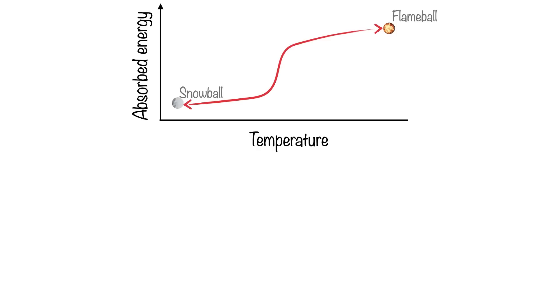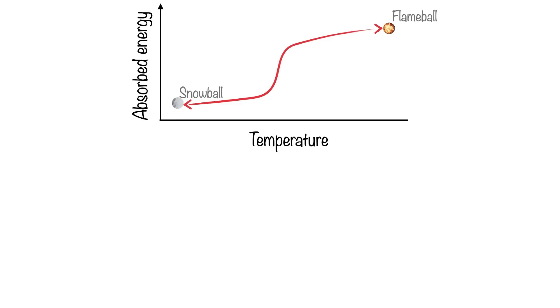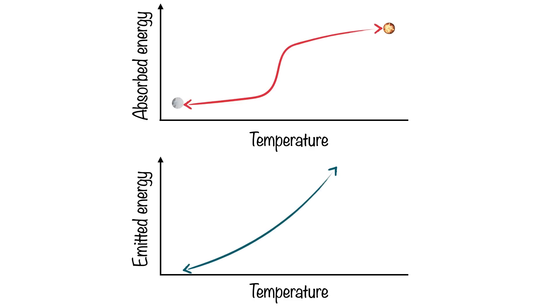The reflection that happens when there's lots of ice and snow reinforces and amplifies the snowball state, keeping it cold. That is, the temperature determines the energy absorption, which in turn determines the temperature. How the absorbed energy changes between these two extremes depends on the underlying physics. The key here is that it's not the incoming solar radiation that's changing, but how much of it is actually absorbed at different temperatures. The emitted energy can also be described well by the underlying physics — a warmer planet would emit radiation better than a cooler planet. So the emitted energy curve looks like this.